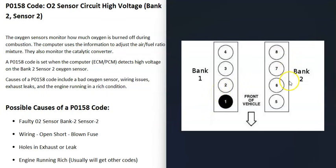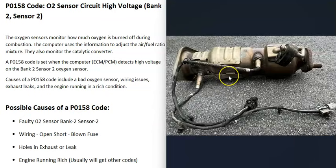There are two O2 sensors on each bank. Sensor one, also called the upstream O2 sensor, is located before the catalytic converter. Sensor two is located after the catalytic converter, sometimes right on it, and is called the downstream O2 sensor.